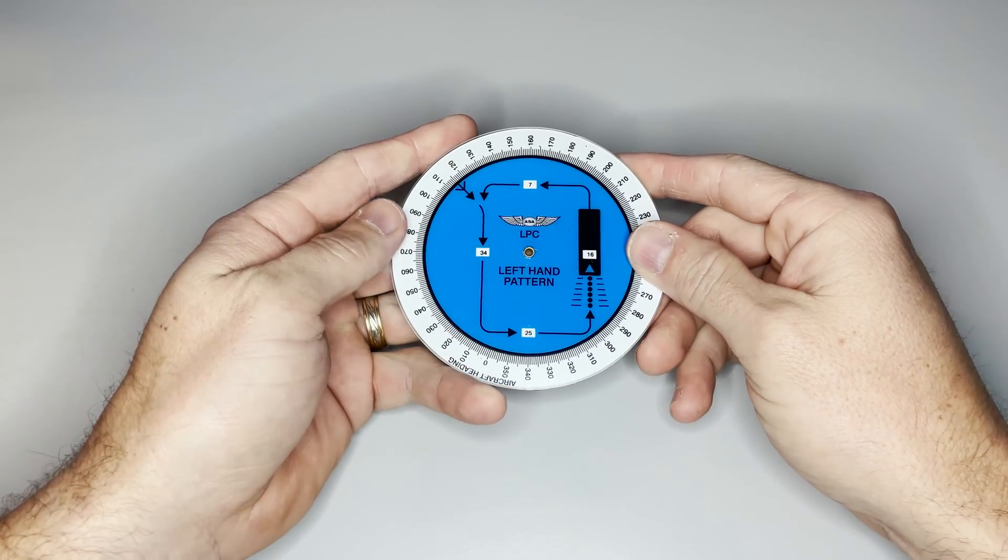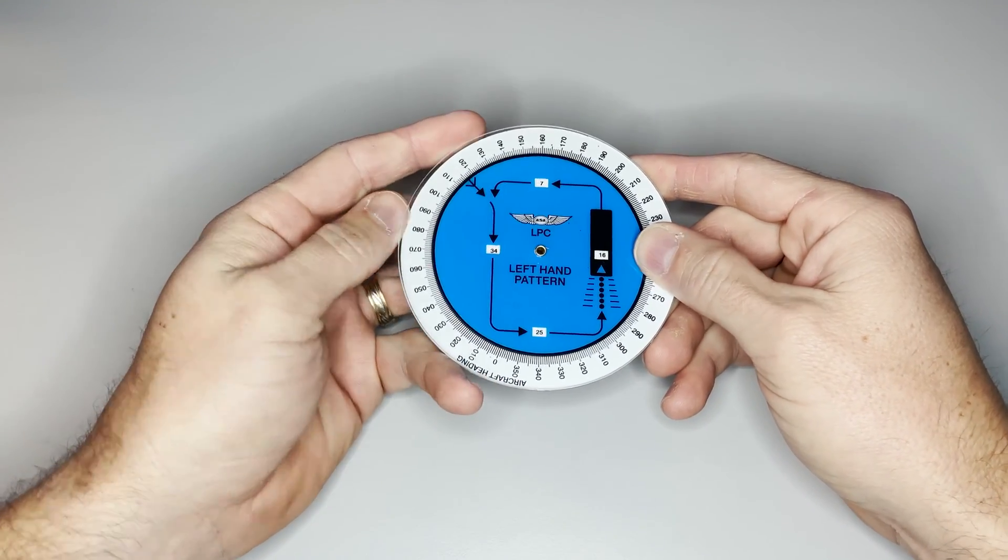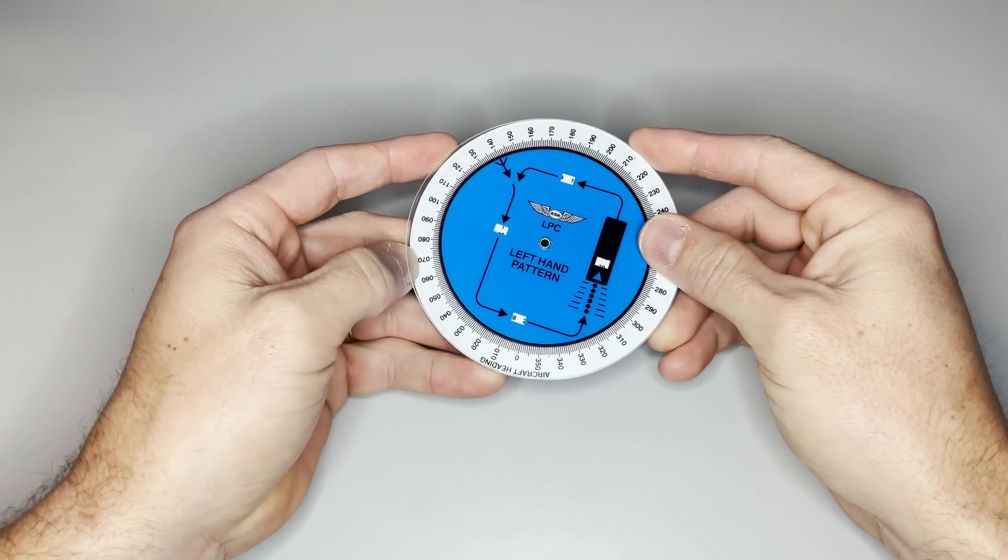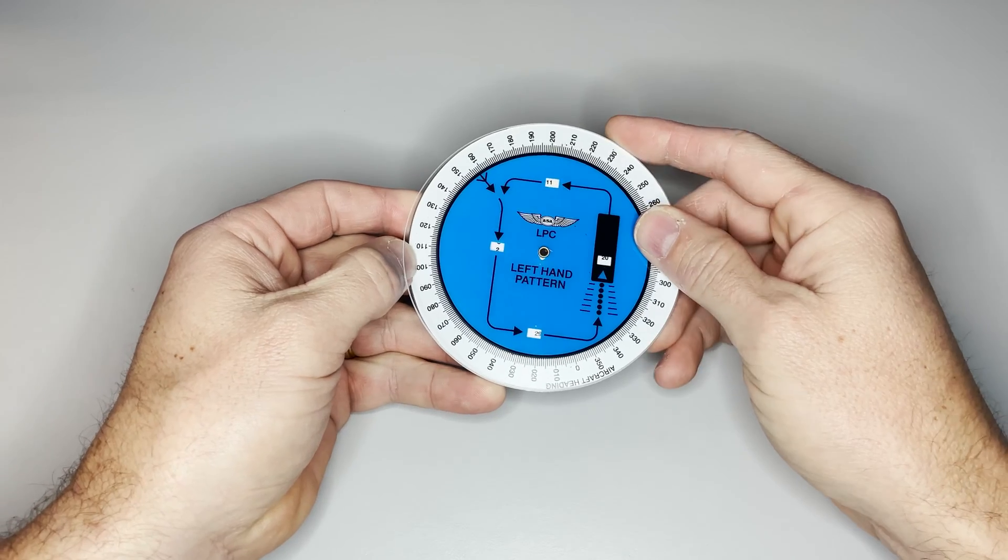Here at Sporty's we have a standard left hand pattern. I can now take and put the runway heading into this window here. The runway here at Sporty's we use today is runway 22.